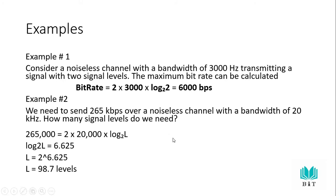For example, if bandwidth is 3,000 Hz and the number of signal levels is 2, then bit rate = 2 × 3,000 × log₂(2) = 6,000 bits per second. A second question: we need to send 265 kilobits per second over a noiseless channel with a bandwidth of 20 kHz. How many signal levels do we need?